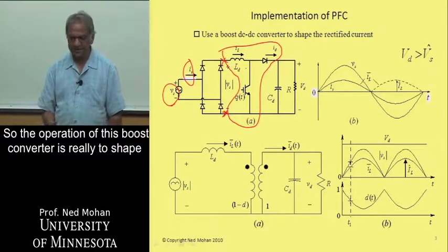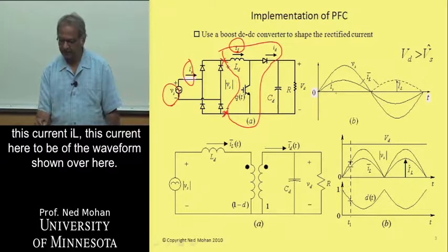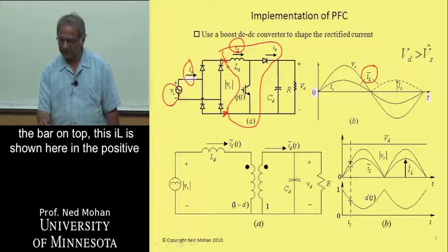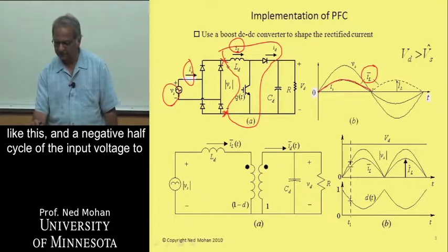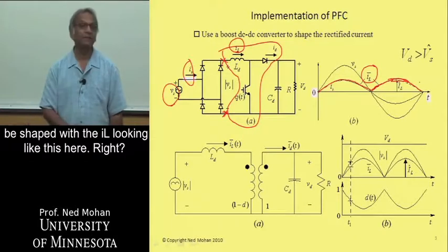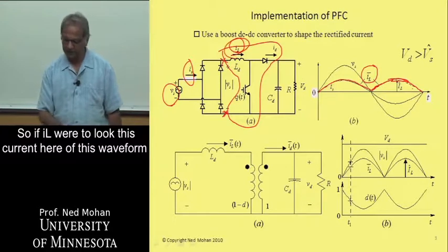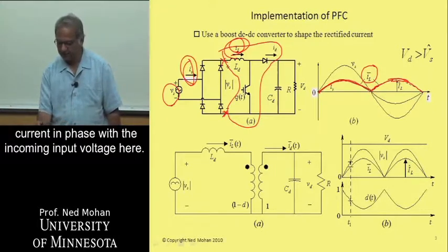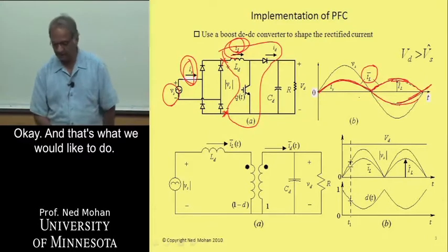The operation of this boost converter is really to shape this current IL to be of the waveform shown over here. If you remove the ripple and talk about IL with a bar on top, in the positive half cycle we would like to shape IL to look like this, and in the negative half cycle we shape IL to look like this. So if IL were to follow this waveform drawn in red, then IS would be a sinusoidal current in phase with the incoming input voltage, and that's what we would like to achieve.